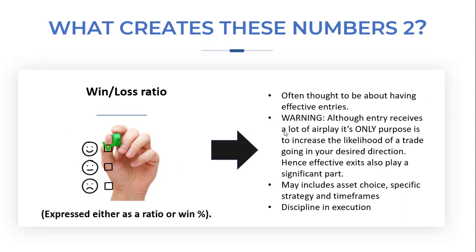When we look at win/loss ratio, expressed as a ratio such as 7:3 or a win percentage, this is often thought to be about having effective entries. A warning though: entry's only purpose is to increase the likelihood of a trade going in your desired direction — effective exits also play a significant part in your win/loss ratio. You can look at these numbers overall, or in relation to specific asset choices, strategies, and time frames, once you have a critical mass of trades. Your next task is to start considering what is actually creating these numbers.